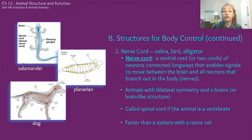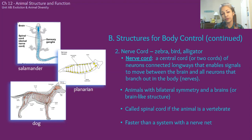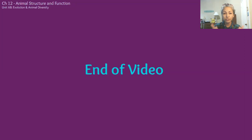Animals with nerve cords include zebras, birds, alligators, and dogs. A nerve cord is a central cord — or it could be two cords — of neurons connected end-to-end, enabling signals to move between a brain and all the neurons branching out in the body. Animals with bilateral symmetry and brains, or brain-like structures, have nerve cords. In vertebrates, the nerve cord is called the spinal cord. The nerve cord operates faster than a nerve net. That's the end of the video — nice job. I'll see you later in Zoom.